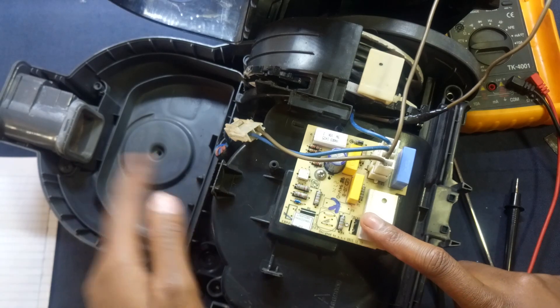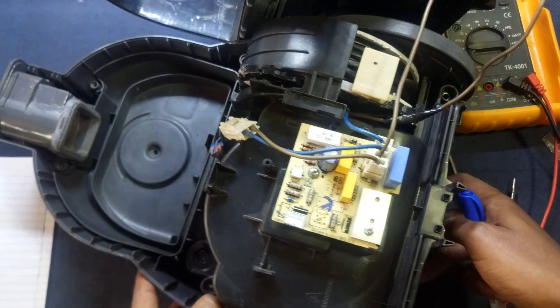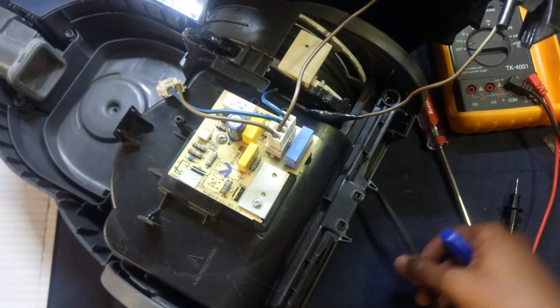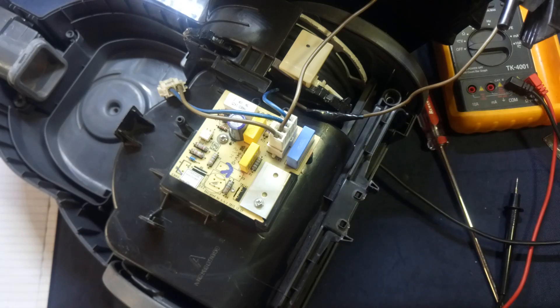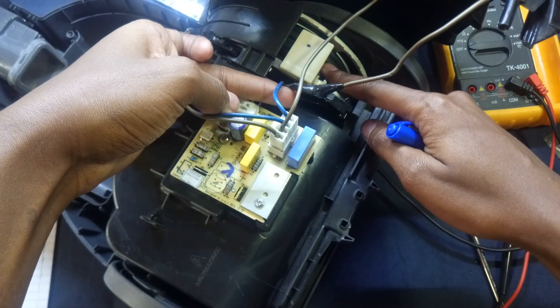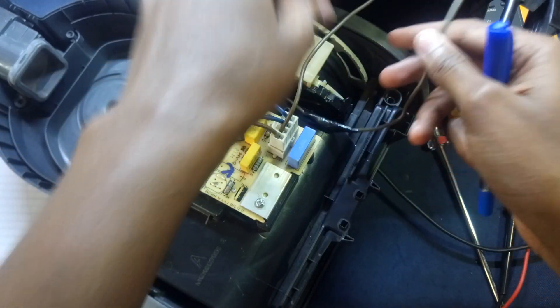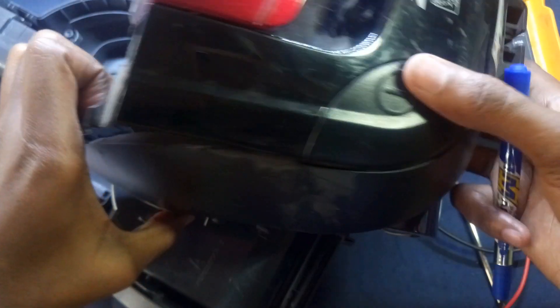To show you the electricity flow, we have the live and neutral over here. When you plug it in, that power usually comes through these two cables from the reel. This cable goes to the switch - this is the on and off switch.